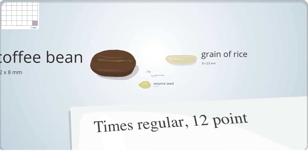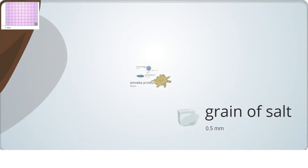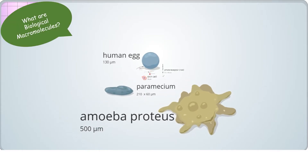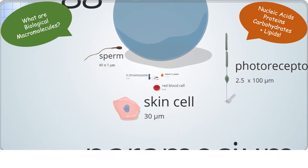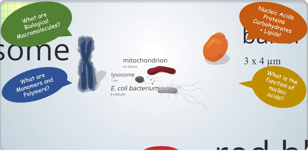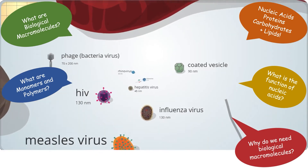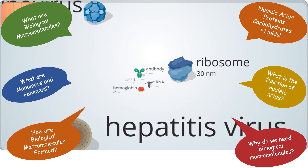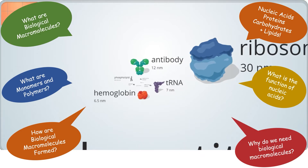It's hard to imagine just how small cells are — the largest cells are still smaller than a grain of salt. But the biological macromolecules that create cells are even smaller. There are four categories of biological macromolecules: nucleic acids, proteins, carbohydrates, and lipids. To understand just how small they are, we have to zoom all the way in to the scale of single nanometers, which is much smaller than the smallest virus.